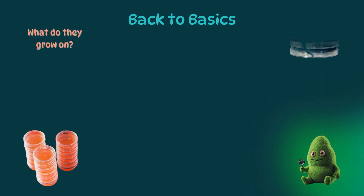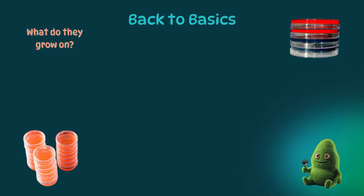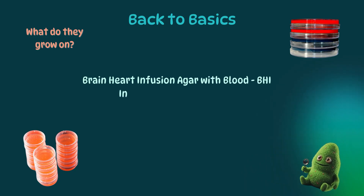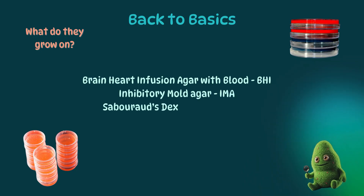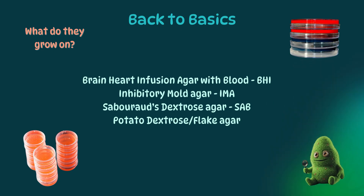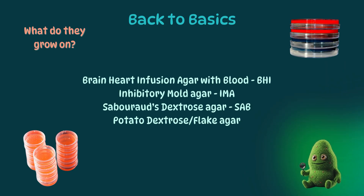Finally, we'll address media — how do you grow fungi? I always say molds are like cats, doing what they want and when they please. In order to create conditions that allow all molds to grow, we need to use an enriched medium like brain heart infusion agar with blood, and a selective medium like inhibitory mold agar, which inhibits bacteria. Sabouraud dextrose agar may also be used, as well as potato dextrose or potato flake agar for mold sporulation. There are also several varieties of these that contain antibiotics to suppress bacteria, which may overgrow fungi and prevent their recovery.